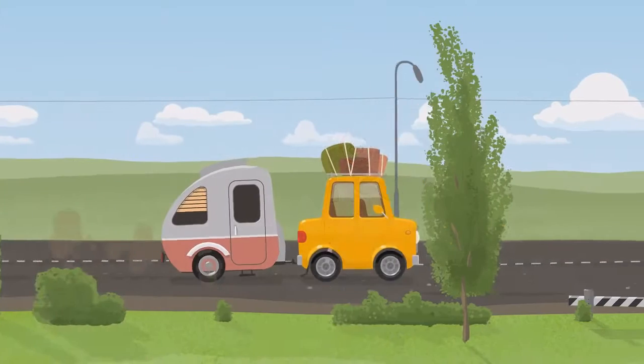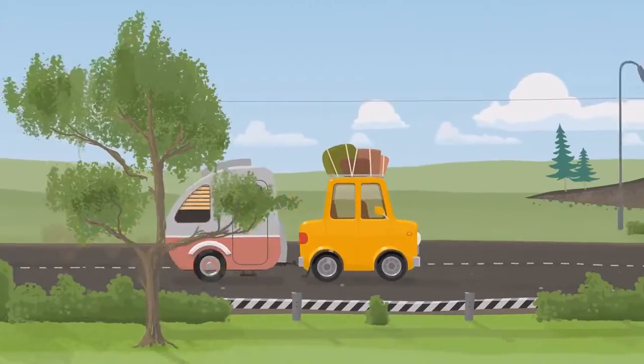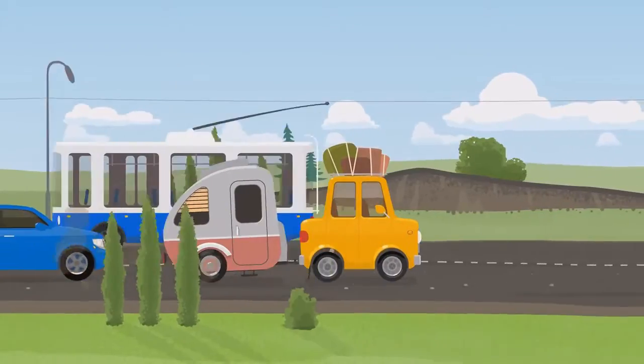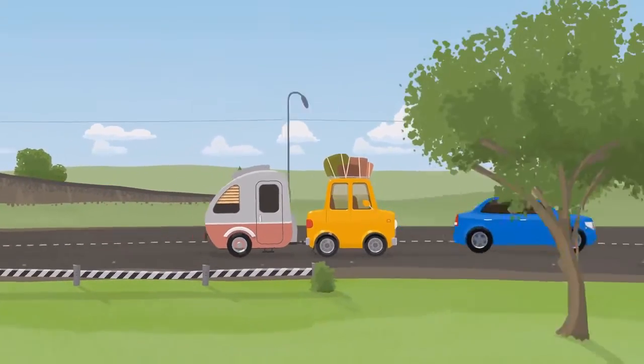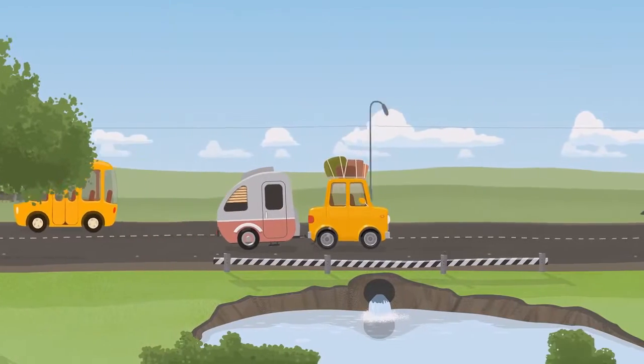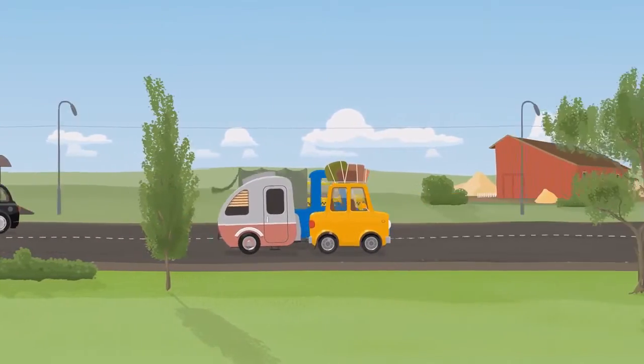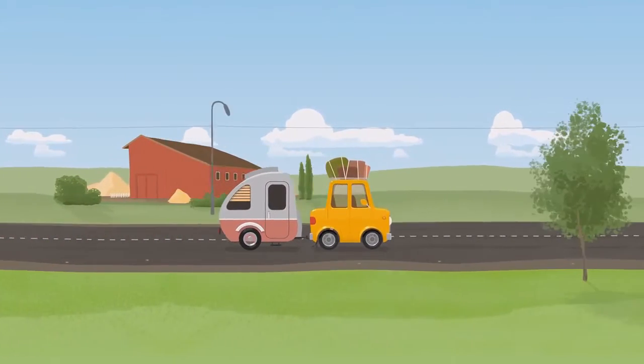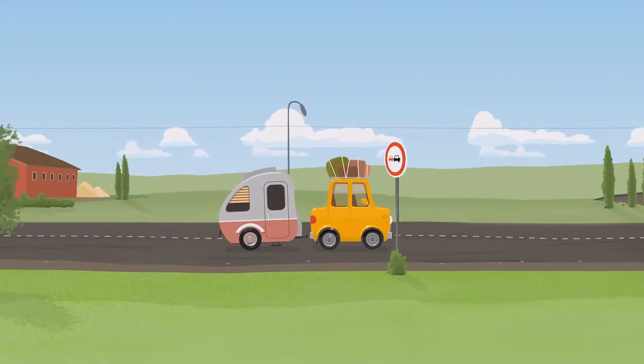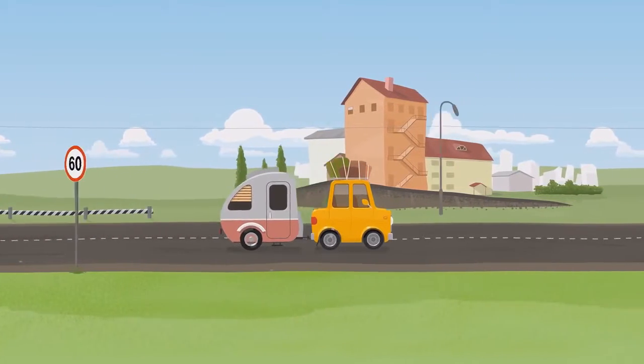Dr. McWheely. A little yellow car with a big trailer is driving on the road. You can live in a trailer like this. And there are suitcases on the roof of the car. I see it's a caravan.